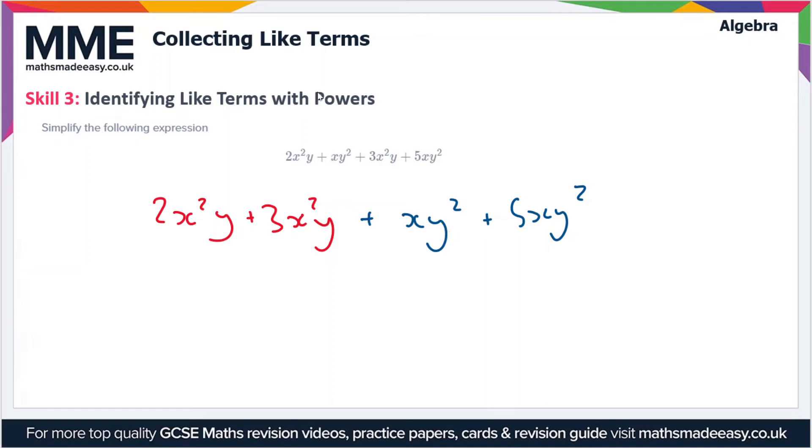So we have to treat these separately. When we simplify this expression, we're just going to add these terms together that are in different colors. So we have 5x squared y, so 2x squared y plus 3x squared y, and we have xy squared plus 5xy squared, which gives us 6xy squared in total.